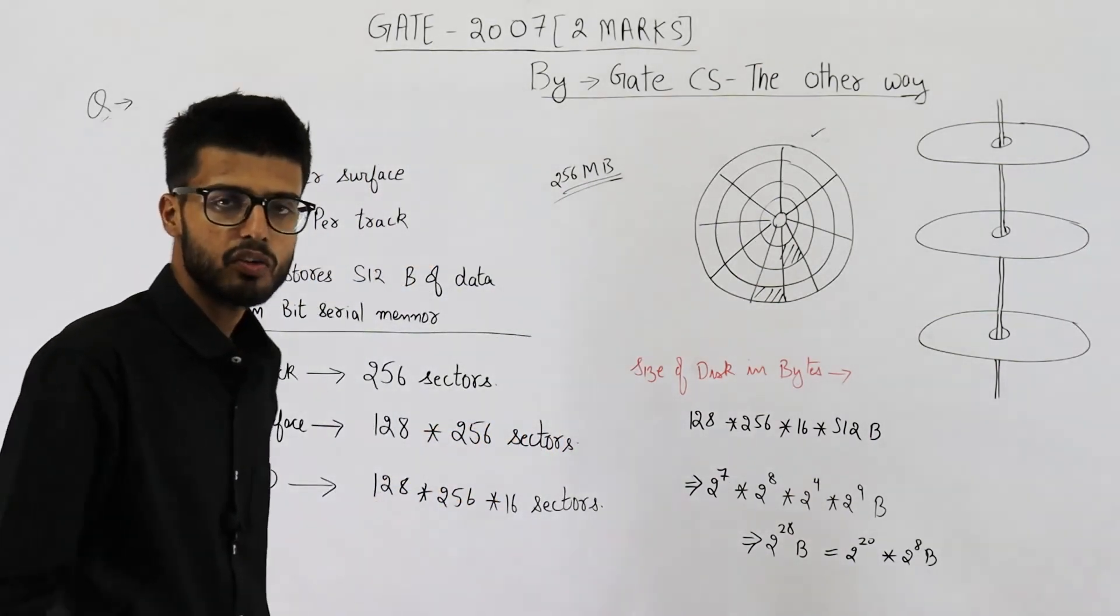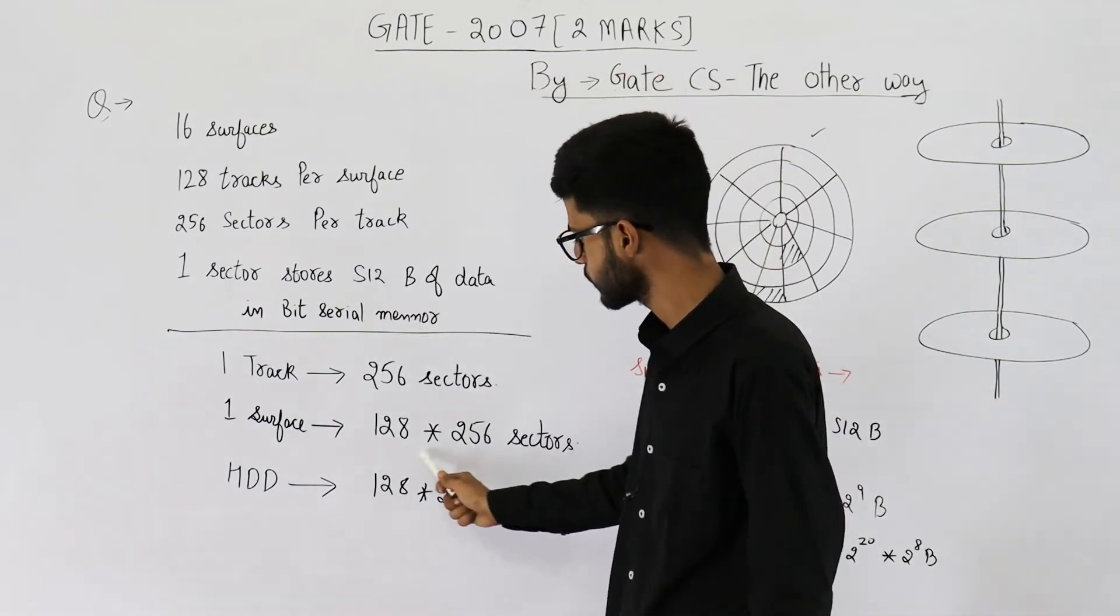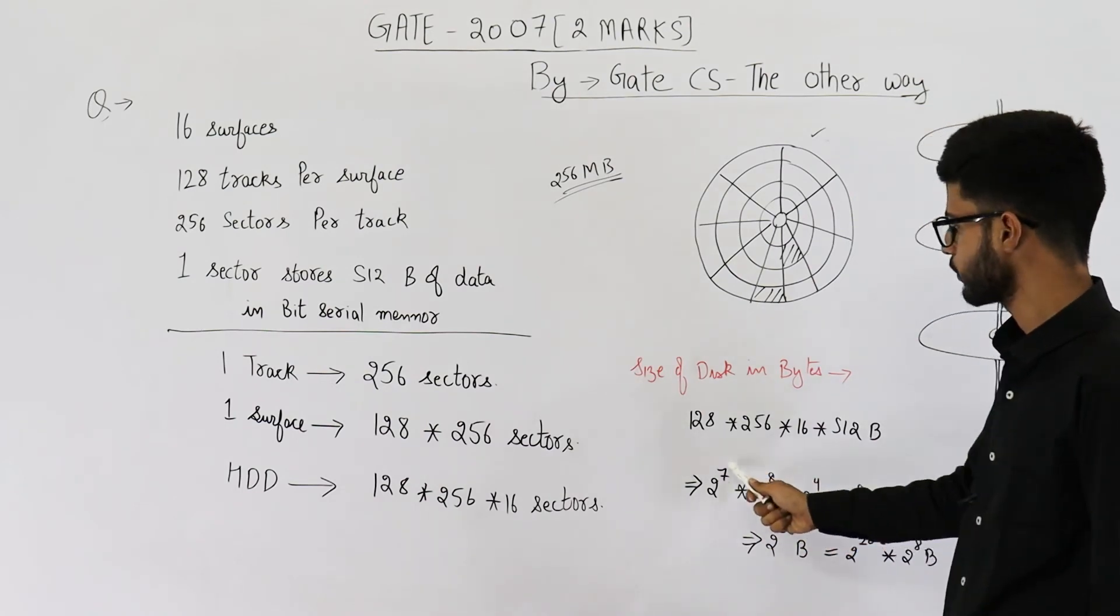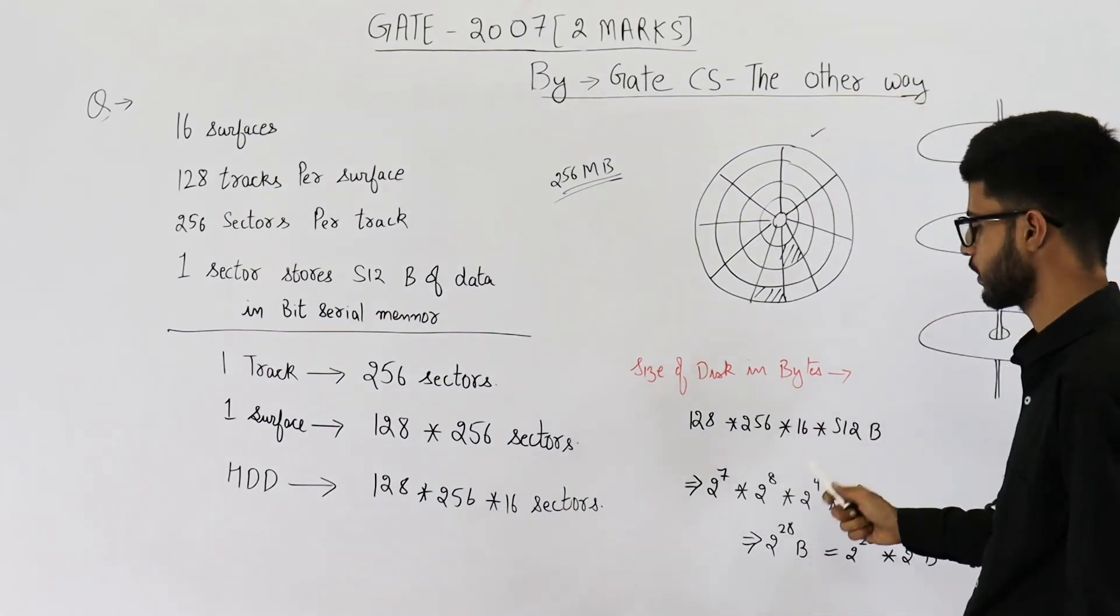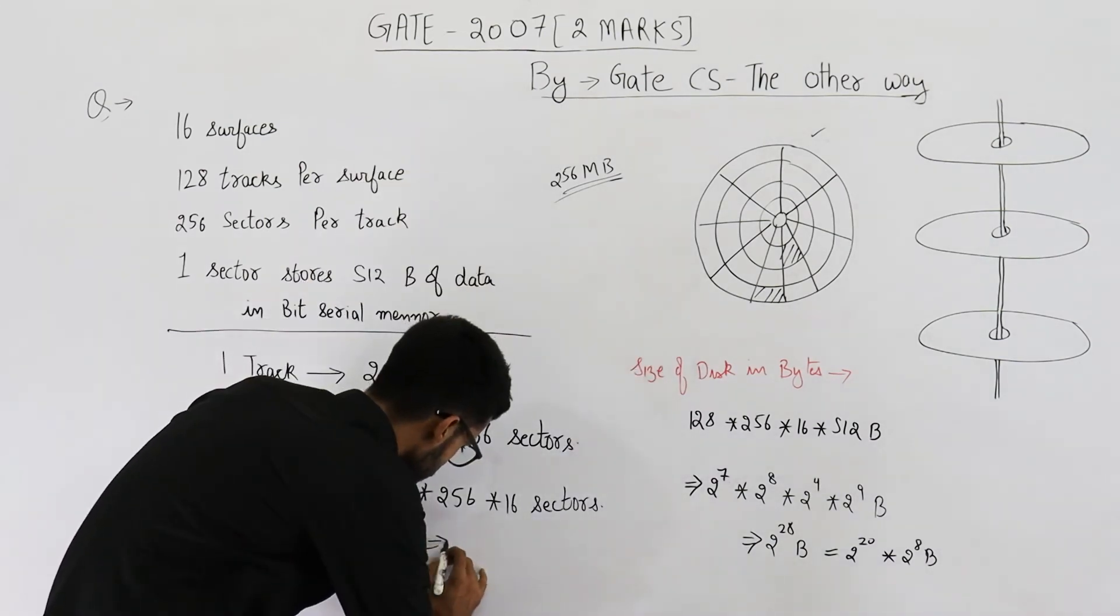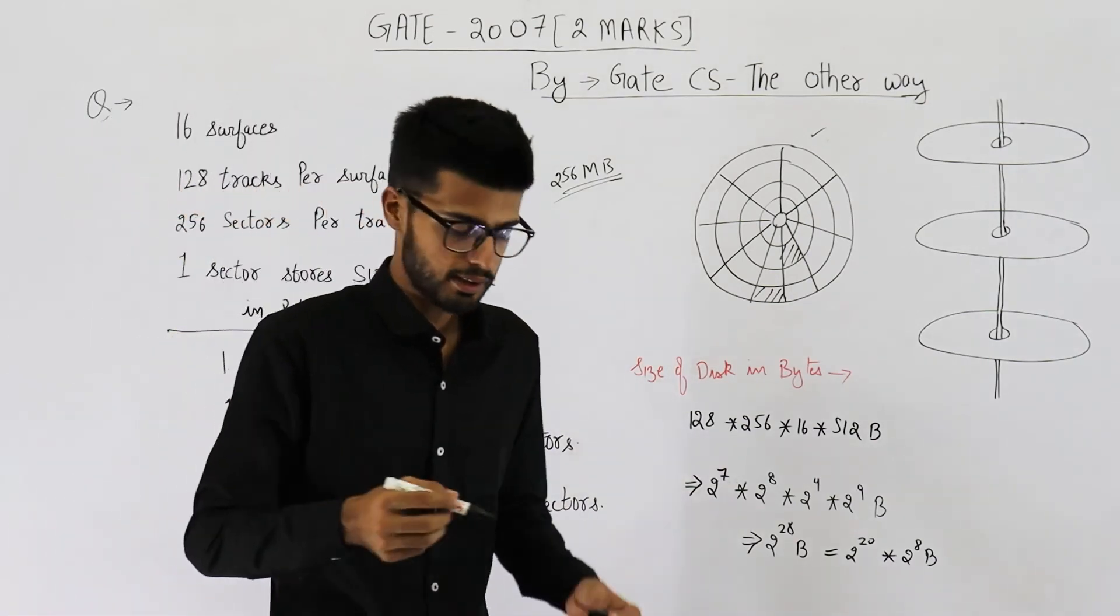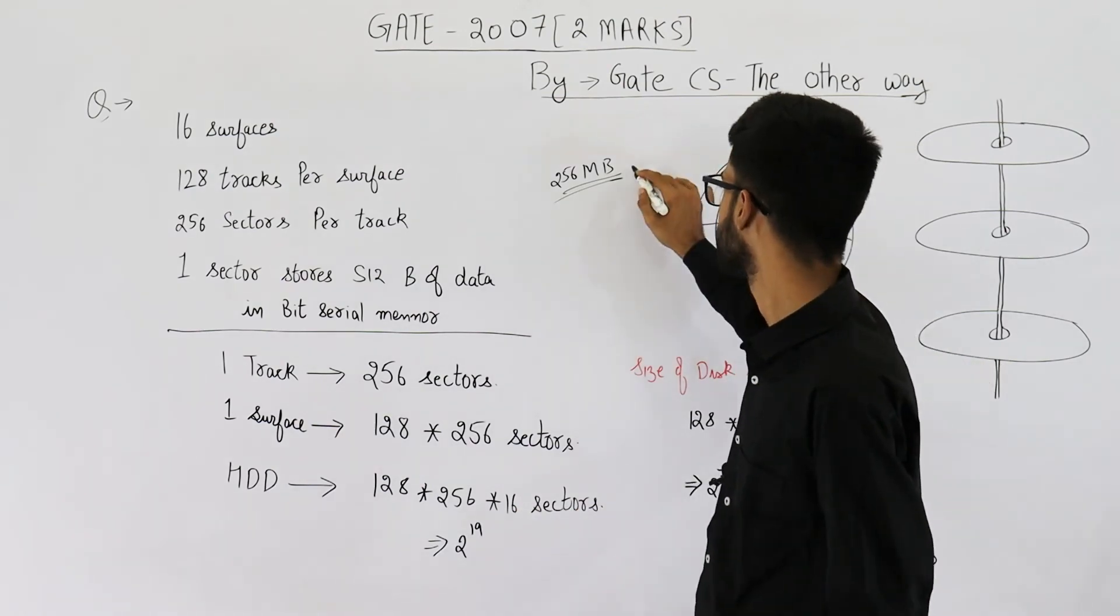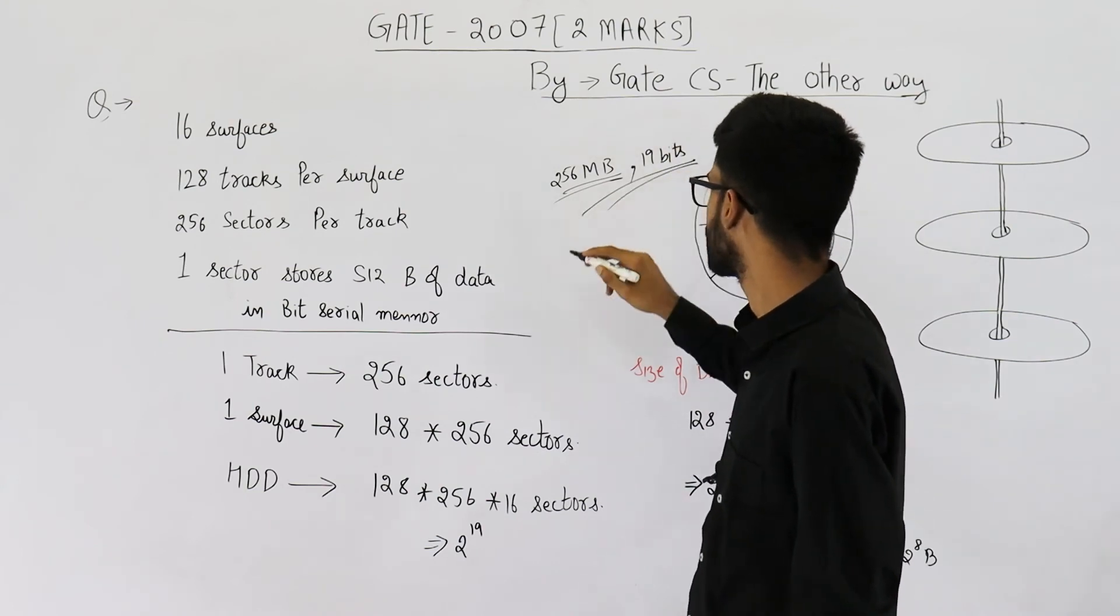Also, they were asking the number of bits required to address one sector. The total number of sectors is 2 to the power 19. So this will be 8 plus 4 is 12, 12 plus 7 is 19. In the hard disk, you have total 2 to the power 19 sectors. To address one of these sectors, you obviously need 19 bits. So the answer to part B is 19 bits.